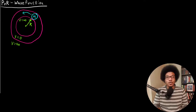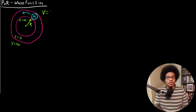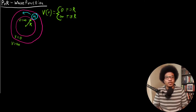We have a particle of mass m confined to a ring where there's no potential acting on the particle within the ring, but it's confined by an infinite potential on both sides. So the potential function works as follows: the potential is a function of the radius, and it is zero if the radius equals capital R, and infinite anywhere else — less than or greater than that distance R.